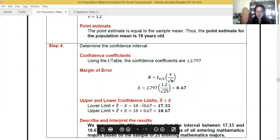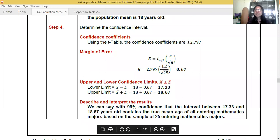So you have 0.67. Next, we subtract it. That's 17.33. We add it. That's 18.67. Remember our rule? If this is a whole number, this should also be a whole number. But since our margin of error is below 1, then we need to express it in two decimal places. So how do we state our results? We say, we can say with 99% confidence that the interval between 17.33 and 18.67 years old contains the true mean age of all entering mathematics majors.